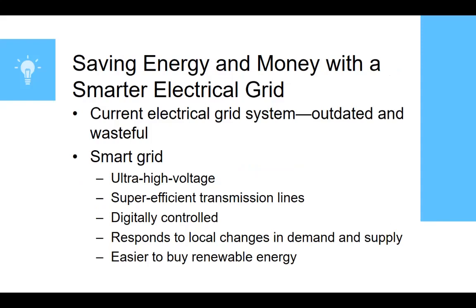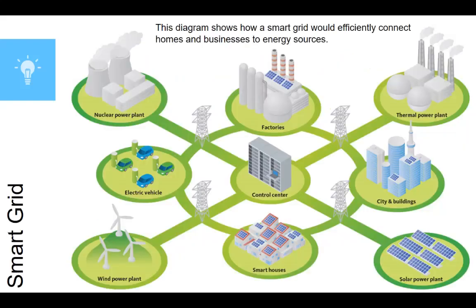We can also look at creating a smarter electrical grid to save energy and money. The current electrical grid system is incredibly outdated and wasteful. If we switch to a smart grid using ultra-high-voltage super-efficient transmission lines controlled digitally, we're able to shift energy to where it is needed most, so we're not losing energy or sending it somewhere it's not needed. This responds to local changes in demand and supply, making it much easier to incorporate renewable energy.